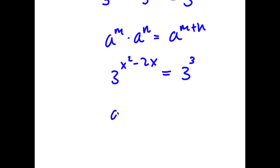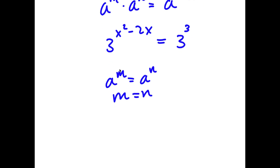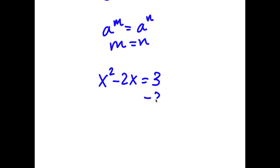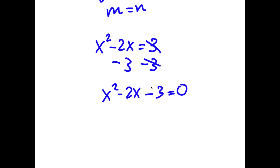If I have something in the form a to the power of m equals a to the power of n, this means that m is equal to n. So in this case, x squared minus 2x is equal to 3. To solve this, I'm going to subtract 3 on both sides, so these two cancel out, giving me x squared minus 2x minus 3 is equal to 0.